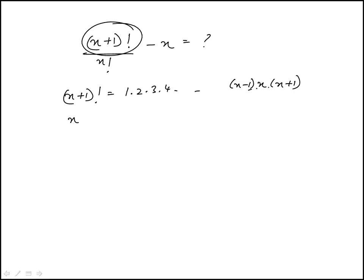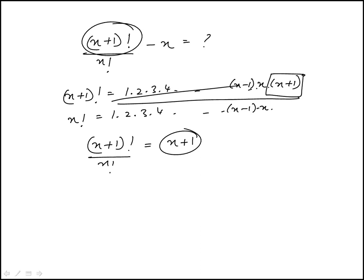and so on and so forth. n factorial would be 1, 2, 3, 4, all the way to n. And you notice that the only difference between n plus 1 factorial and n factorial is this extra term. So when we divide them, this would just be n plus 1, because we divide these, this piece drops out, left with n plus 1.